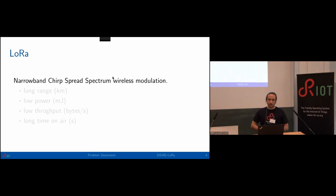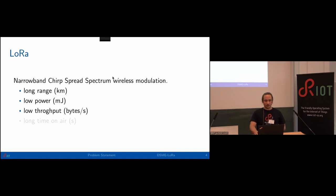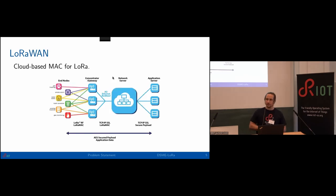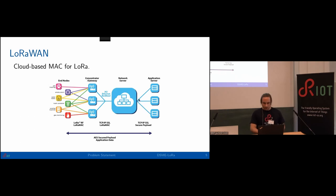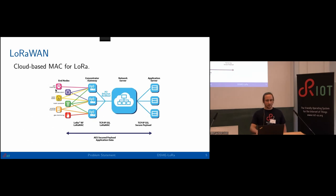A bit of background on LoRa: LoRa is a narrowband chirp spread spectrum wireless modulation that supports long-range transmission up to 15 kilometers and even more with low power, although it usually has very low throughput in the order of bytes per second and a very long transmission time on air. On top of that, there's LoRaWAN, which is a cloud-based MAC for LoRa. End devices exchange data with gateways, which feed into network servers, which deploy the data to application servers. It's also possible to send data back via downlink to end nodes.